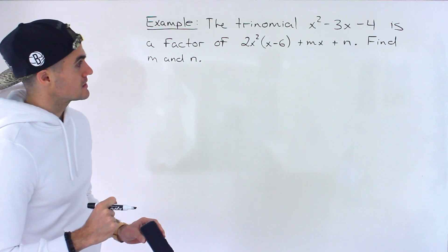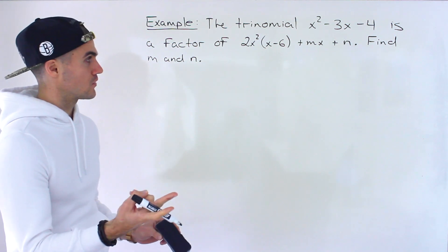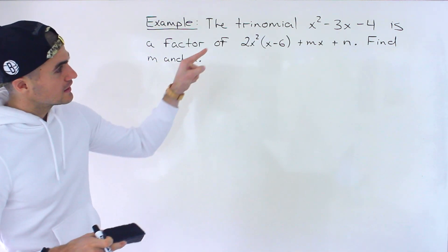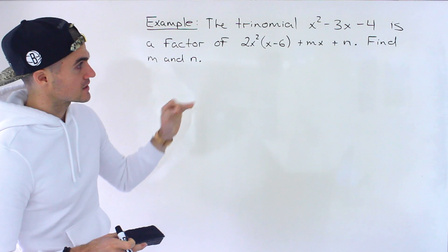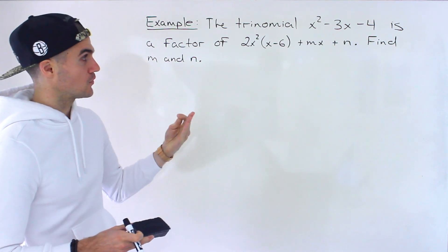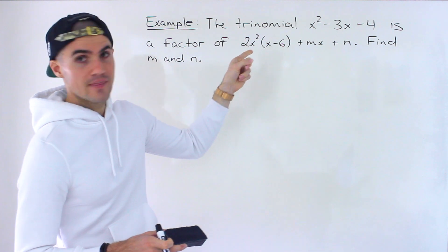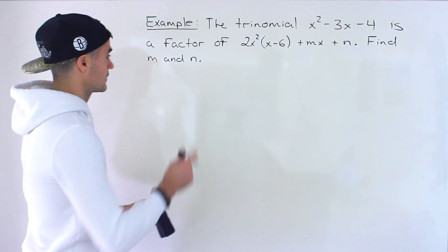Now notice in this case there's two constants to solve for. So we're going to need two equations. But notice that we're only given one factor x squared minus 3x minus 4. But if you notice this factor is a quadratic and that quadratic you can actually factor.